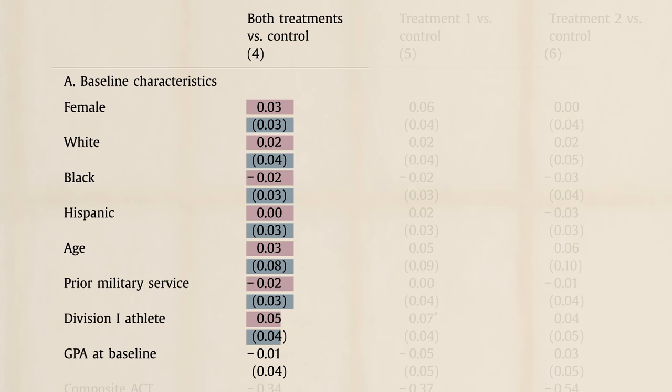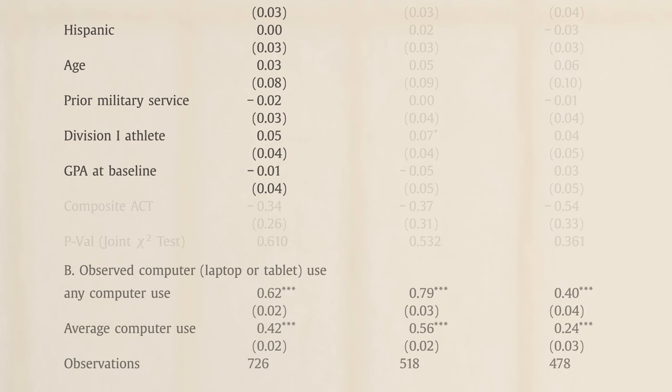Correct. The random division of students appears to have succeeded in creating groups that are indeed comparable. We can be confident, therefore, that any later differences in classroom achievement are the result of the experimental intervention rather than a reflection of pre-existing differences. Ceteris Paribus achieved. Cool.